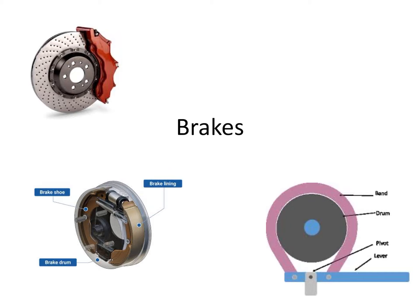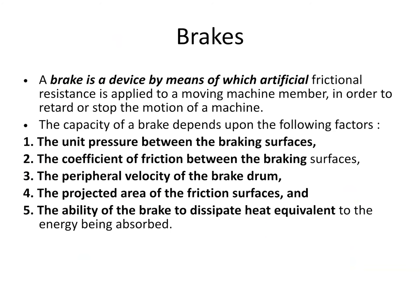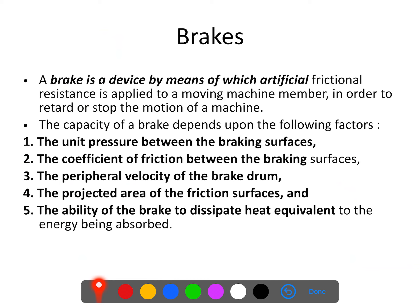We are going to start a new topic: brakes. Brakes are generally used for stopping the vehicle or for retarding the motion. In this topic we are going to see the various types of brakes, their applications, and mainly we are going to study two types: band brakes and block brakes, along with their numerical analysis. A brake is a device by means of which artificial frictional resistance is applied to a moving machine member in order to retard or stop the motion of the machine.